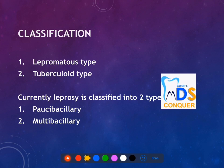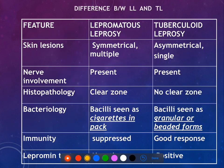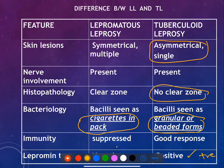The classification of leprosy includes two traditional types: lepromatous and tuberculoid. The current classification uses paucibacillary and multibacillary. The Ridley-Jopling classification has seven types; tuberculoid polar has high resistance whereas lepromatous polar has low resistance. In comparison, tuberculoid leprosy shows asymmetrical lesions with granular, beaded bacillary forms, and a positive lepromin test, whereas lepromatous leprosy has a negative lepromin test and bacilli packed like cigarettes.